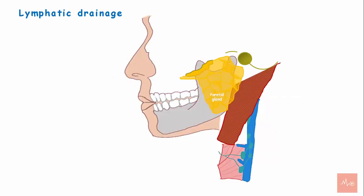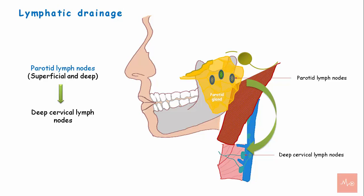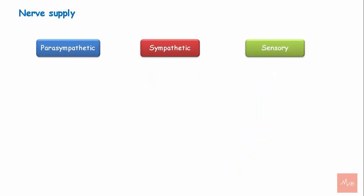Regarding lymphatic drainage, lymph from the parotid gland drains into the superficial and deep parotid lymph nodes and finally into the deep cervical lymph nodes. The parotid gland is supplied by parasympathetic, sympathetic, and sensory nerve fibers.